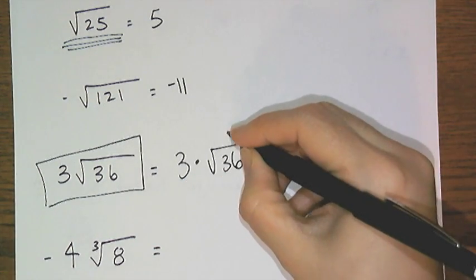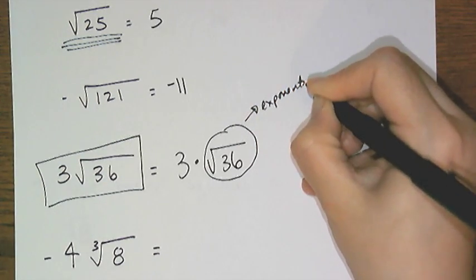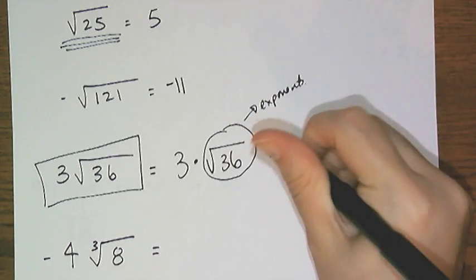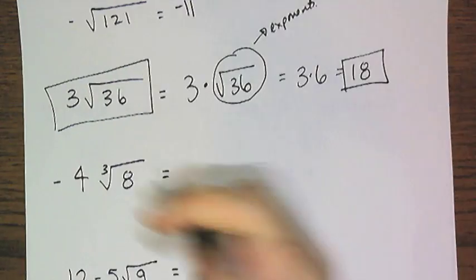And remember I said in the very beginning that radicals were the same thing as exponents. So you have to simplify the exponent first, and then you get 3 times 6, which is 18.